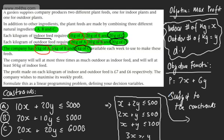In the last video, we started looking at linear programming. As we can see in this particular case, we've got a range of constraints — for example, x plus 2y is less than or equal to 500. When we've got two decision variables, so in this case x and y, we can represent our linear programming problem graphically. In this video, we're going to look at some of the basics of graphing inequalities and finding what we would call the feasible region.